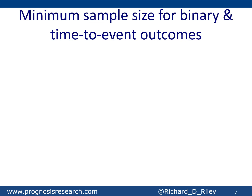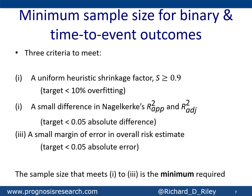Focusing on binary and time-to-event outcomes, we propose three criteria. First, to minimise overfitting, we target a sample size that aims to achieve a shrinkage factor of 0.9 or closer to one. This corresponds to wanting overfitting of less than 10%, suggesting that if penalisation and shrinkage is needed it's going to be quite small. We want to make sure the sample size is large enough so that we have low problems of instability caused by overfitting.